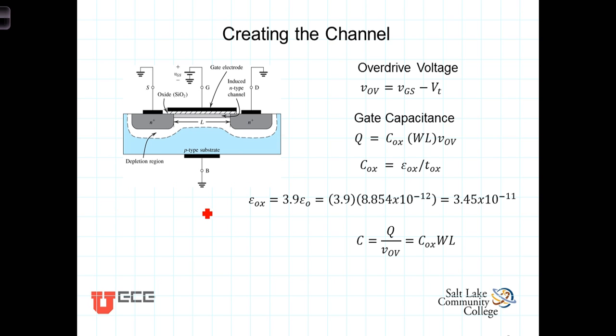The voltage at the gate is the voltage above ground or relative to ground. Since the source is also grounded, the gate voltage is also the voltage at the gate relative to the source and it's convenient to refer to the voltage of the gate as VGS.